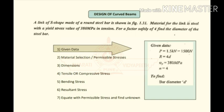A 1.5 kilonewton tensile force is applied on this link, and 4D is the distance from the center to the centroidal axis. So we have P = 1.5 kN (1500 N), R = 4D (the centroidal radius), yield stress = 380 MPa, and a factor of safety of 4. We have to find the dimension of the bar, which is diameter D.